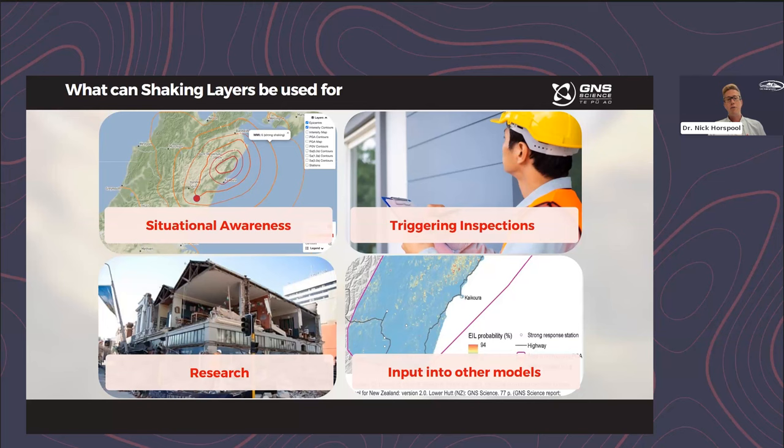Shaking Layers can also be used for research purposes — if you're wanting information on shaking from previous events that might go into things like correlating damage with shaking intensity, Shaking Layers can be used for that. It can also be used as an input into other models such as landslide or liquefaction triggering models, as well as impact and risk models used to estimate the impact following events.